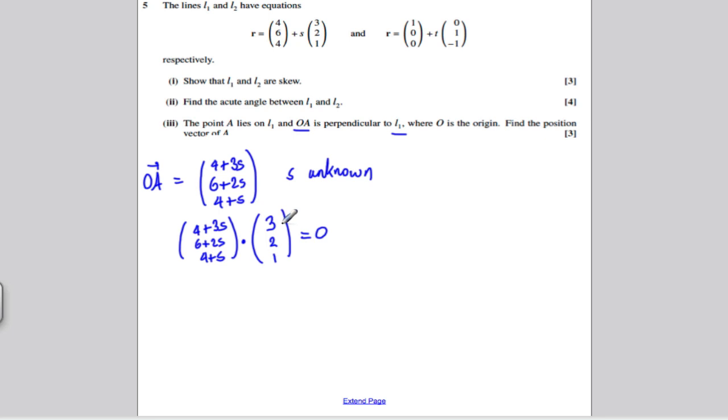So 4 plus 3S, 6 plus 2S, and 4 plus S, if I take the dot product of those with 3, 2, and 1, that's going to give me the answer 0. Timesing this out, 3 times that would give me 12 plus 9S, 2 times that would give me 12 plus 4S, and 1 times that would give me 4 plus S. All of that must be 0. 9S, 4S is 13S plus another one would be 14S. 12 plus 12 is 24 plus 4 is 28, and you get 0. Subtract 28 and divide by 14, you would get S has to be equal to minus 2.